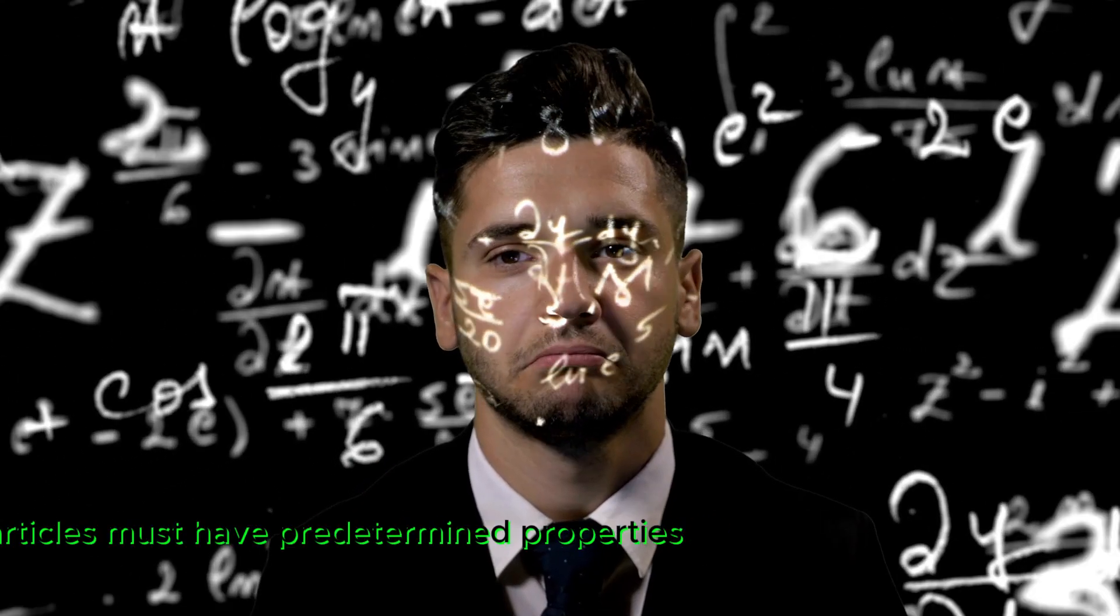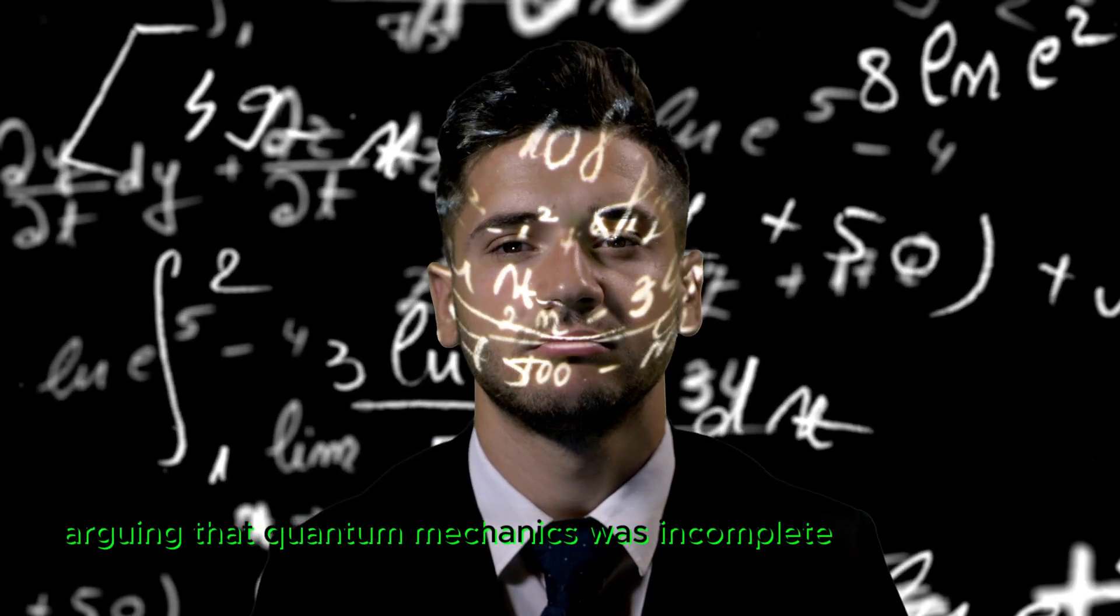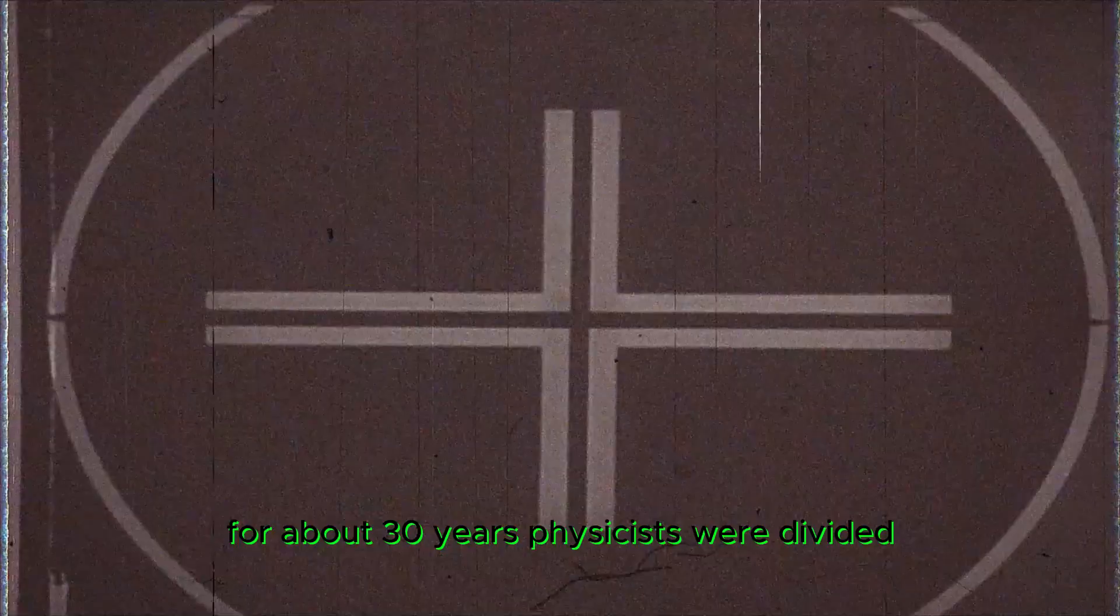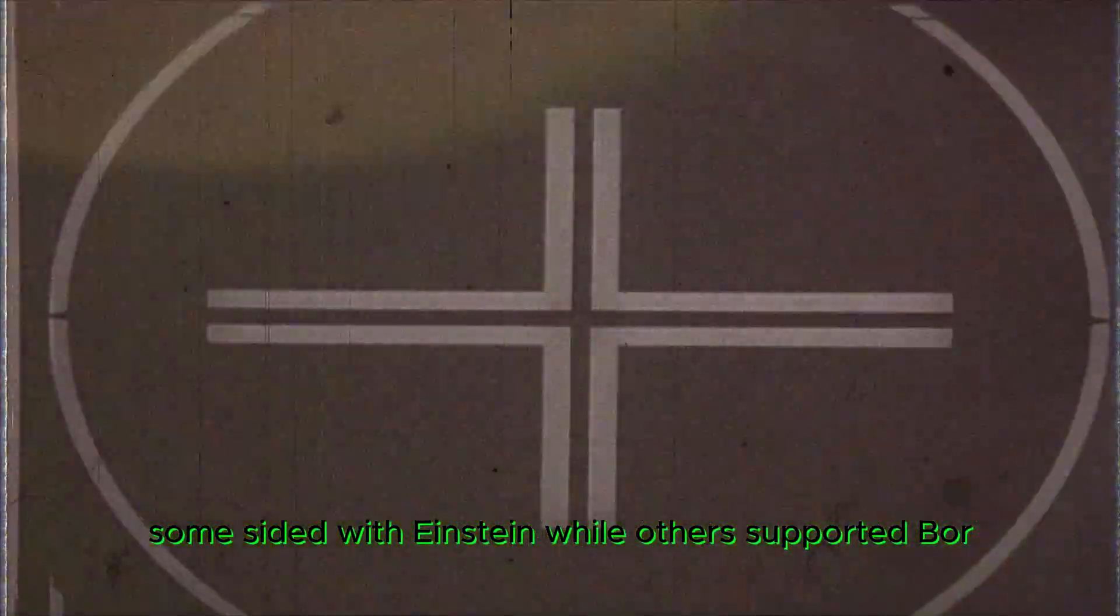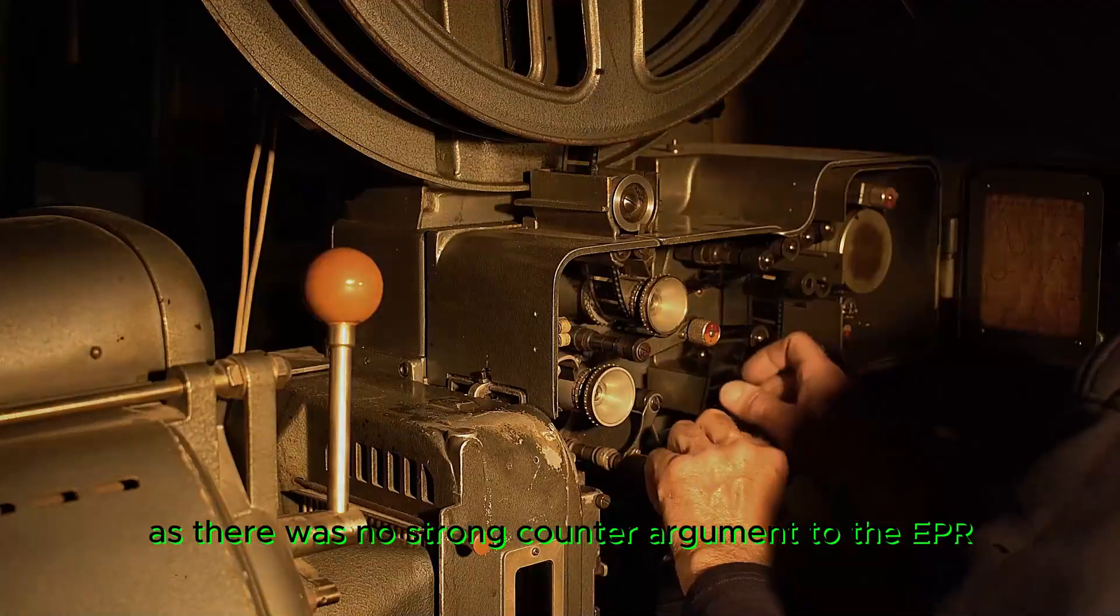Einstein believed that particles must have predetermined properties, he called this hidden variables, arguing that quantum mechanics was incomplete. For about 30 years, physicists were divided. Some sided with Einstein, while others supported Bohr, as there was no strong counter-argument to the EPR paper.